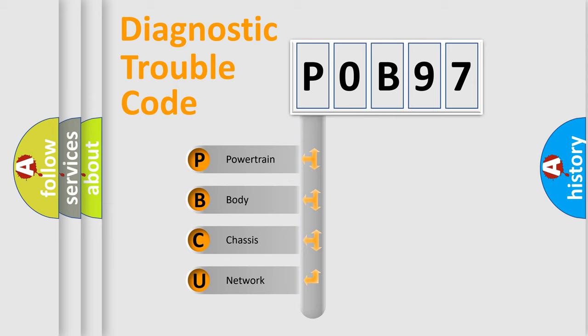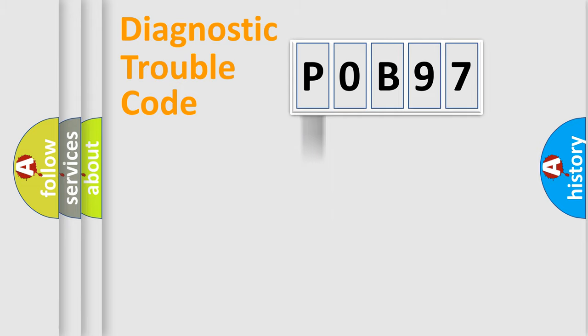We divide the electric system of the automobile into four basic units: Powertrain, Body, Chassis, and Network. This distribution is defined in the first character of the code.